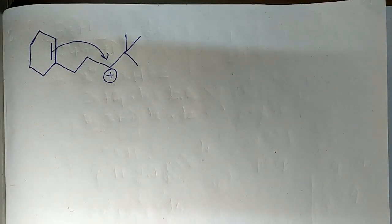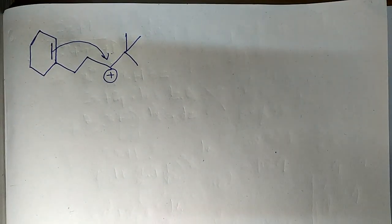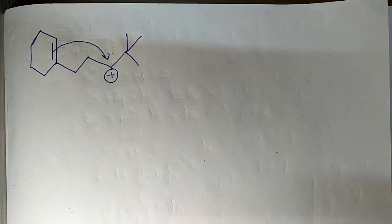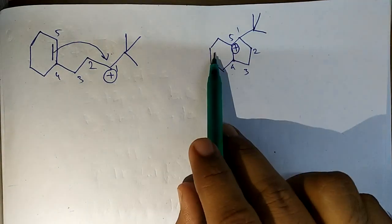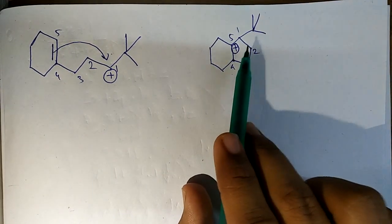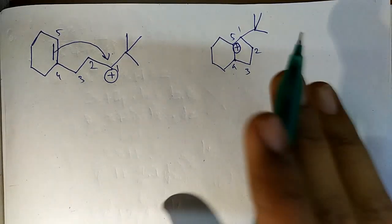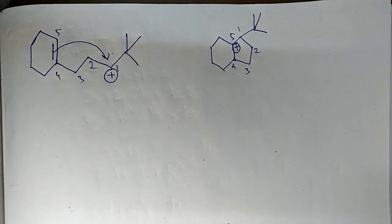Here one five-member ring is formed, and we know that a five-member ring is not much stable. So what can be the other case? Here is another chance of carbocation rearrangement.